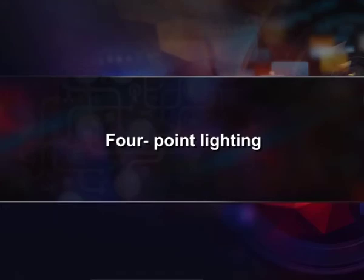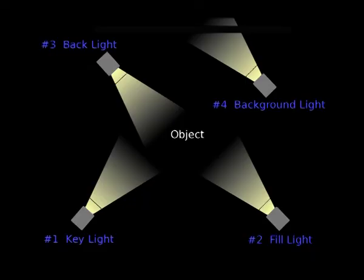Four-point lighting — if you have a fourth light, you could use it to light the background of the entire scene. A typical four-point lighting setup is given in the diagram. The background light is placed behind the subject on a high grid or lower to the ground.